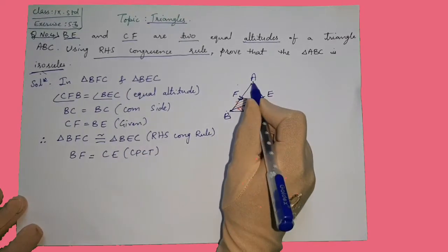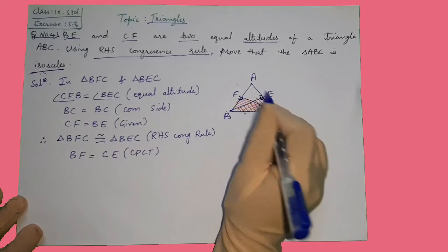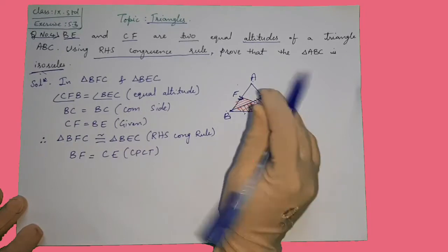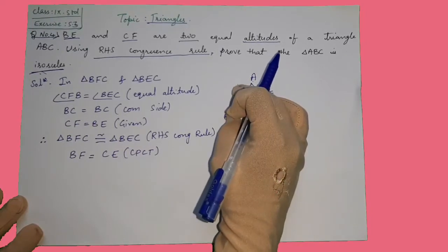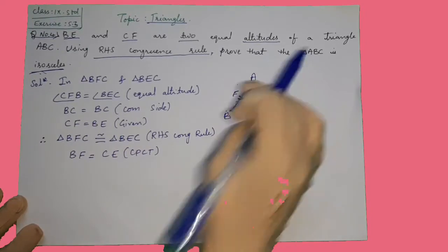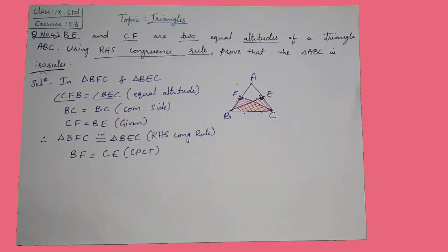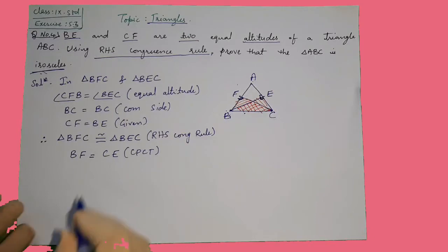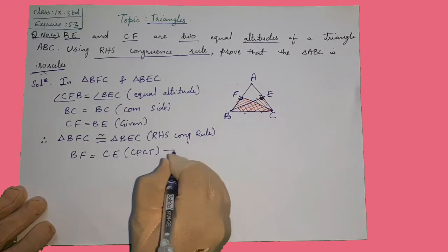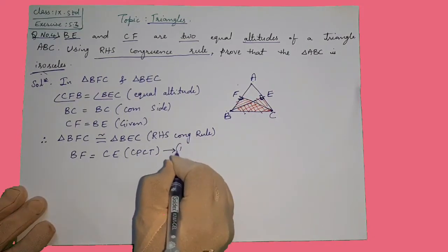We have proved that BF equals CE. Now we need to consider another pair of triangles. Consider triangle ACF and triangle AEB.